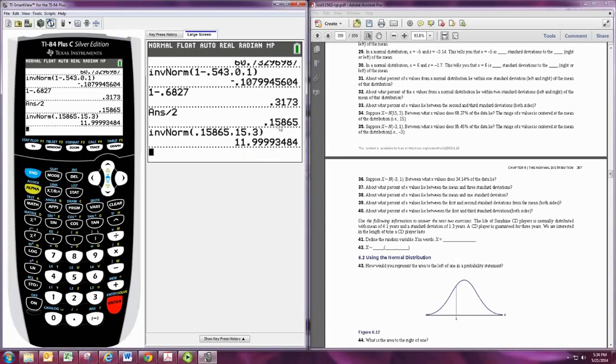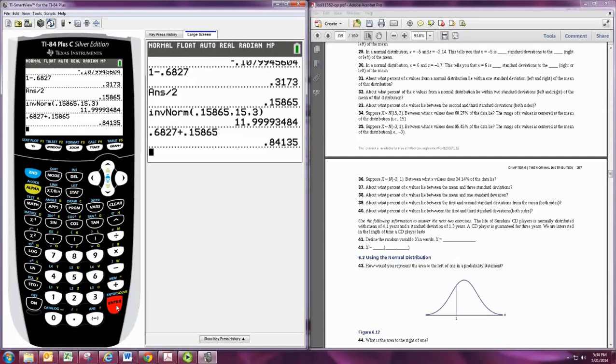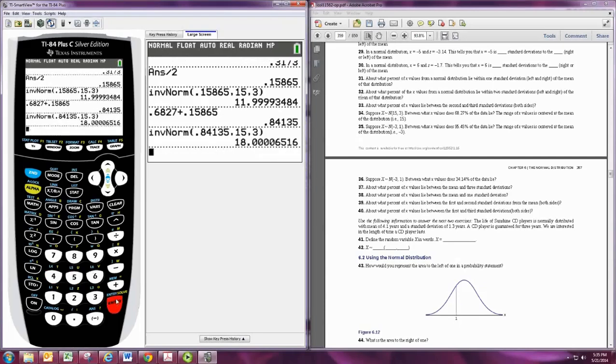Now, the area in the left tail is 0.15865, and the middle is 0.6827. So if we add the middle to the area of the left tail, we get the total area of the middle and the left tail. That's the total area to the left of the right marker. Now, that's the number we want to put in, 0.84135. If we put that into the calculator, it'll give us the other x value that we're looking for. So we know that 68.27% of the data lies between 11.9999 and 18.000, essentially between 12 and 18.